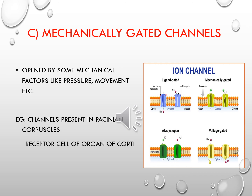Another example is the receptor cells of the organ of Corti, a receptor organ in the ear. There are hair cells in the organ of Corti with cilia. When sound waves cause the movement of cilia and the hair cells, this results in the opening of potassium channels, leading to the development of receptor potential. Here the movement of hair cells has caused the opening of potassium channels — so these are mechanically gated potassium channels. Some sort of mechanical action resulting in the opening of ionic channels defines mechanically gated channels.